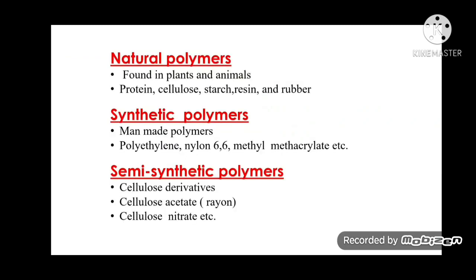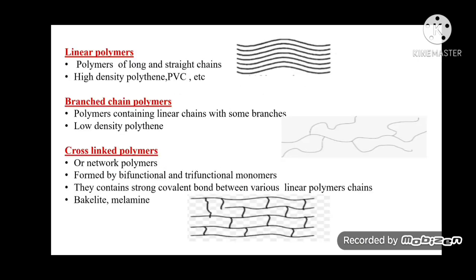Natural polymers are found in plants and animals; protein, cellulose, starch, resin, and rubber are examples. Synthetic polymers are man-made polymers; polyethylene, nylon, methyl methacrylate, etc. are examples. Semi-synthetic polymers are cellulose derivatives such as cellulose acetate (rayon) or cellulose nitrate. Another classification is based on the branching or linearity of the polymer.